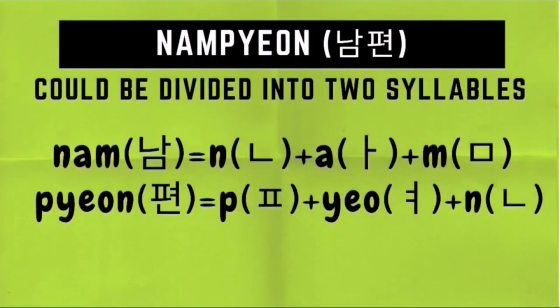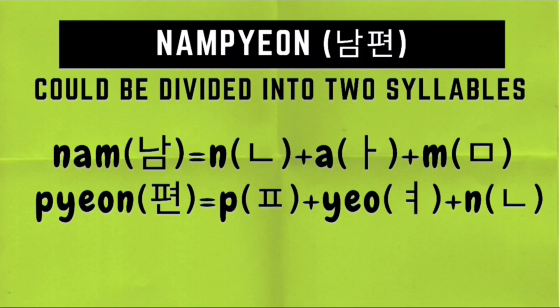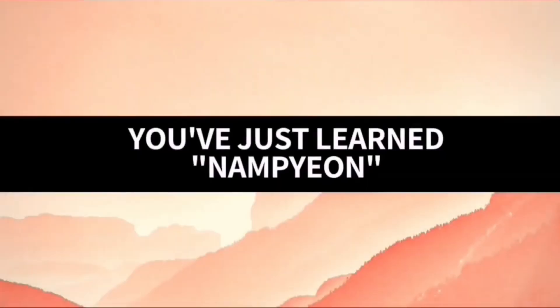How do we write Nampyeon in Hangul? It is composed of two syllables. For the first syllable, Nam, we need a nieun character, followed by an A character, followed by a mieum character — that's nieun, A, and mieum for Nam. For the second syllable, Pyeon, we need a pieup character, followed by the yo character, followed by the nieun character. We combine the Hangul for each syllable to write Nampyeon in Hangul. Again, remember Nampyeon means husband. And with that, you've just learned Nampyeon.